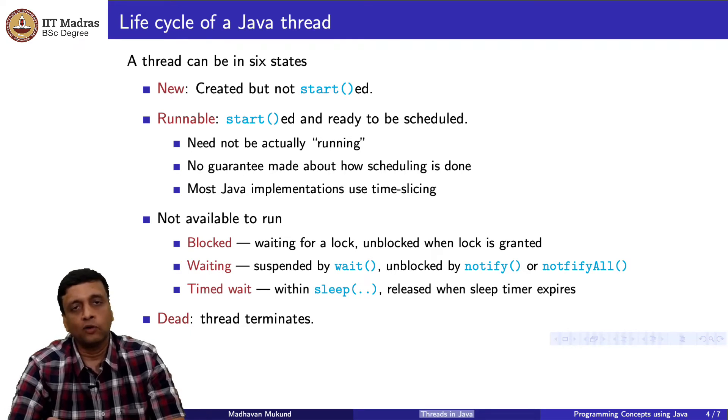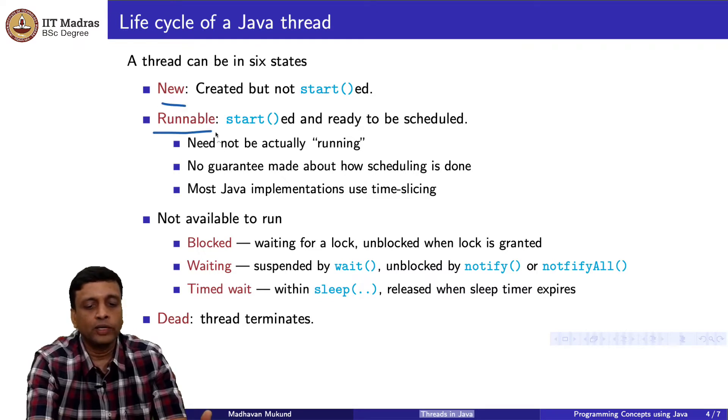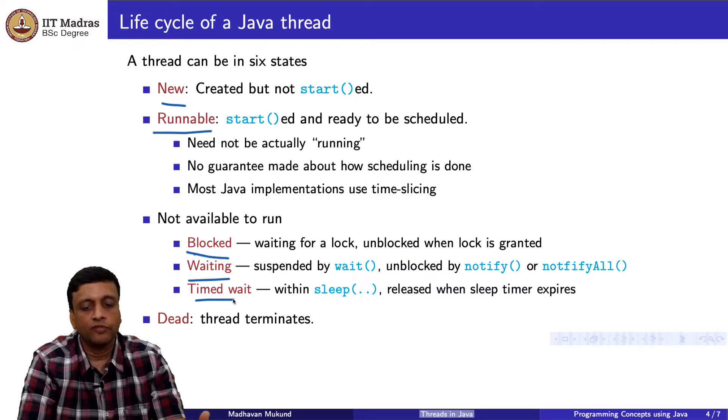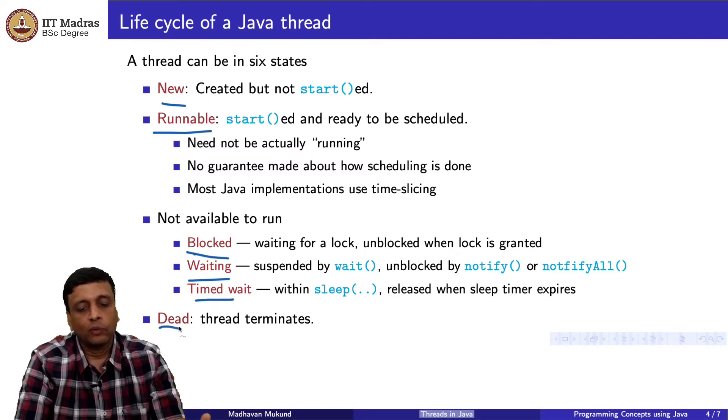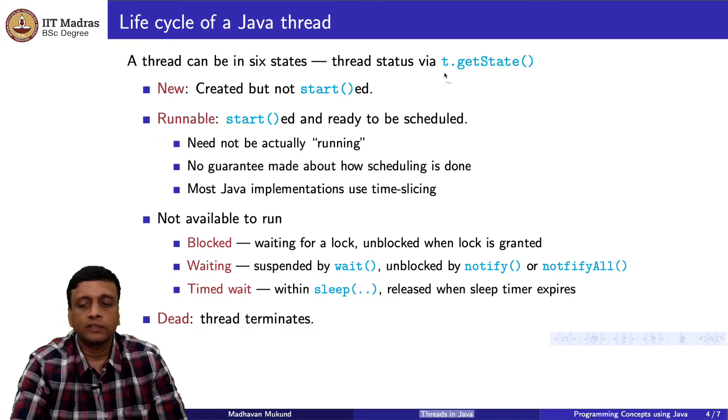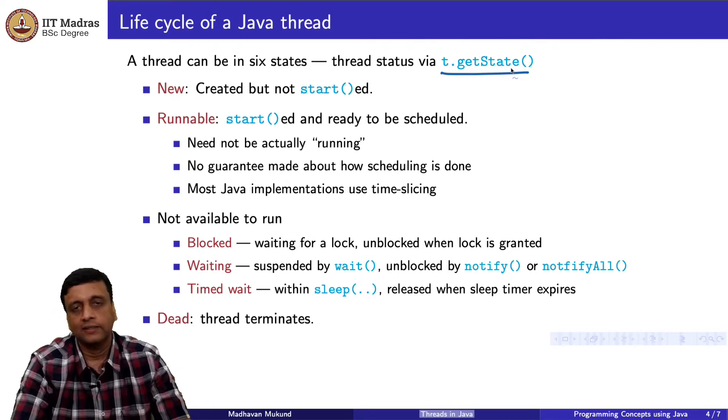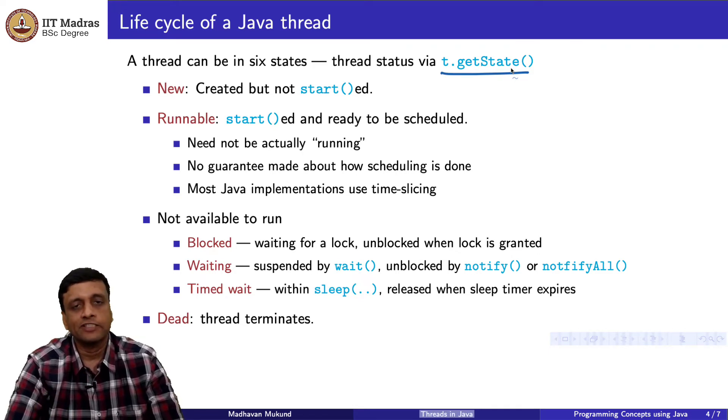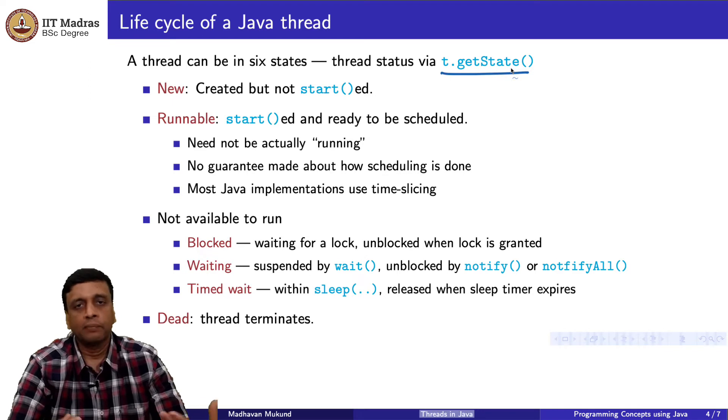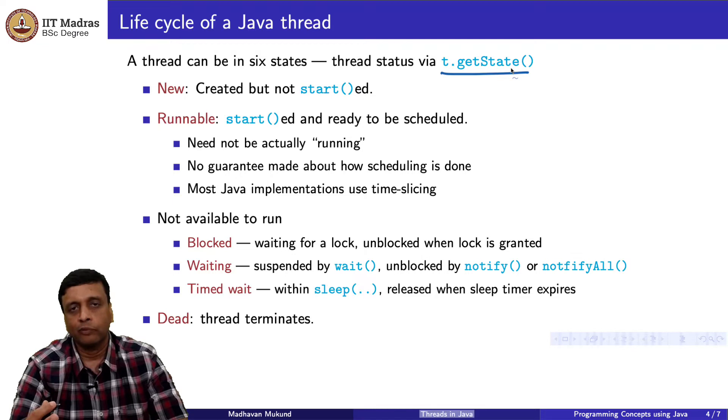And finally, like any other function, eventually, hopefully, the thread will finish and then it goes into a dead state. We have six states. We have new, runnable, then these three versions of being blocked and one dead state. And there is actually a function in Java called get state which you can apply to a thread and find out which state it is in. It will give you a kind of an enumerated variable which will be one of these six things. This is the life cycle of a Java thread. It begins as a new thread, then it becomes runnable. While it is runnable, periodically it may block or it might wait or it might be in a timed wait. And eventually, it should end and it becomes dead.